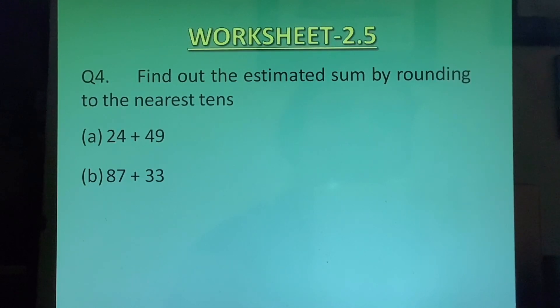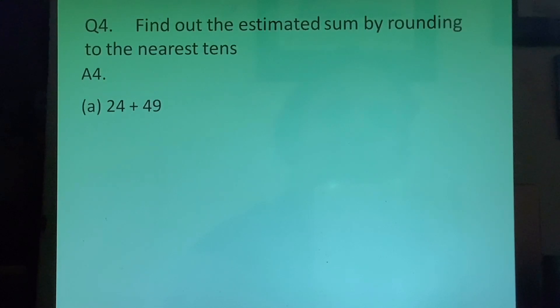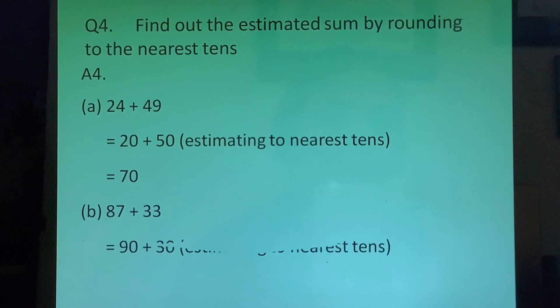Question 4 Find out the estimated sum by rounding off to the nearest tens. A part 24 plus 49. So 24 plus 49 will round off to 20 plus 50. 24 will round off to 20 and 49 will round off to 50. Answer we will get as 70. B part 87 plus 33. 87 will round off to 90 and 33 will round off to 30. Answer we will get as 120.